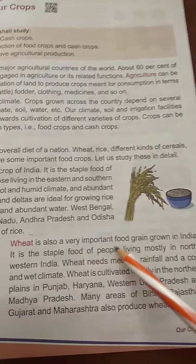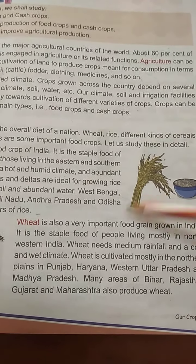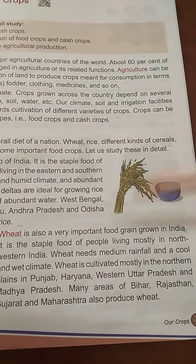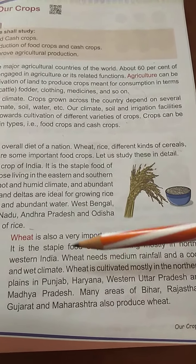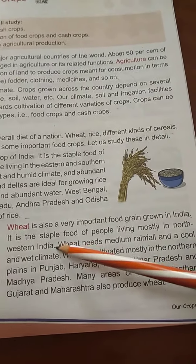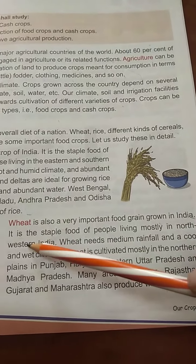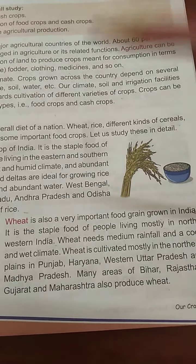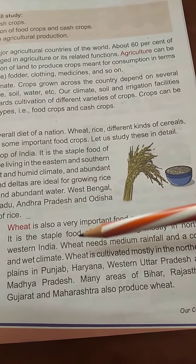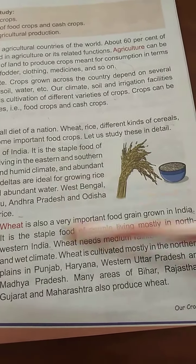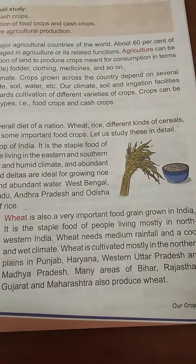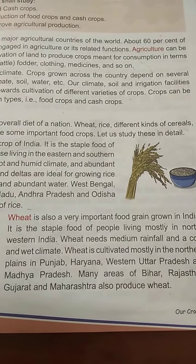Wheat is also a very important food grain grown in India. When we think of wheat, we think of Punjab. Wheat is the staple food of people living mostly in north-western India — in our region we eat rice, but in the north-west, people consume wheat more. Wheat needs medium rainfall and a cool and wet climate.